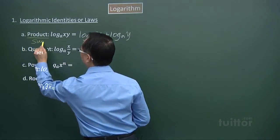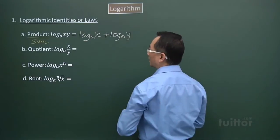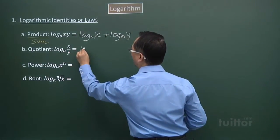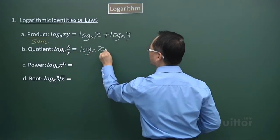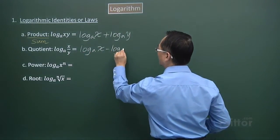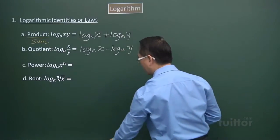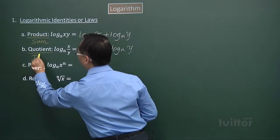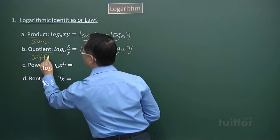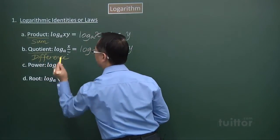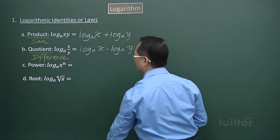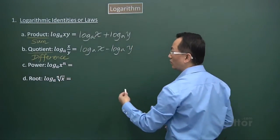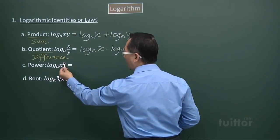So log base a of (x times y) equals log base a x plus log base a y. When we talk about the product, we think sum. For the quotient identity, we have log base a x minus log base a y — where we have the quotient, we think difference.